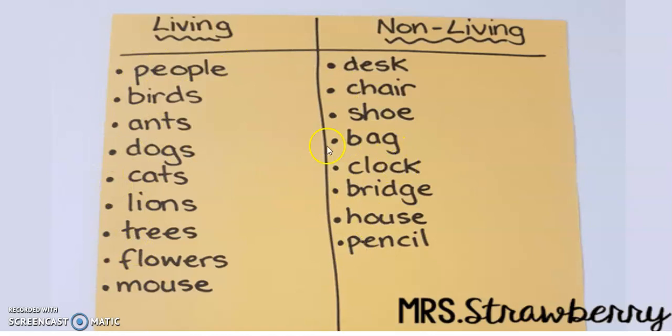Here's another list for you. Living things like people, birds, ants, dogs, cats, lions, trees, flowers, mouse. Non-living things like your desk, your chair, clock, bridge, house, pencil, bag, or shoe.